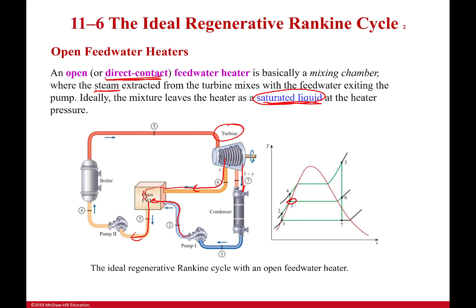One issue is that when the mixture becomes a saturated liquid, it might not be at the pressure we need. So we have to pump it again to get it to the pressure required for the boiler. By doing this, we go from having an average temperature between the lower values to somewhere between the higher values, increasing our average temperature for heat addition and really improving our efficiency.